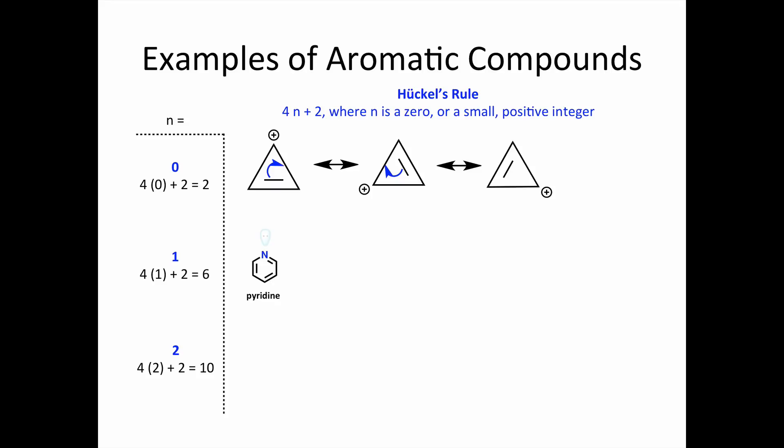Pyridine is a weak base because it has a lone pair that does not participate in the pi system. It sticks out perpendicular, or orthogonal, to the pi electrons. Orthogonal lone pairs can make bonds without disrupting aromaticity, so this methyl-substituted pyridinium ion, like the pyridine salt we saw earlier, is also aromatic.